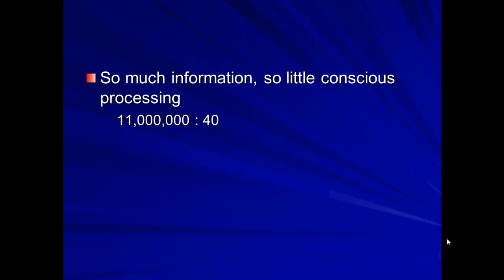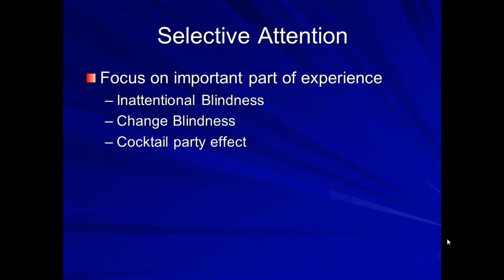Our attention really needs to be focused on part of the environment because we can't process all of it. This is called selective attention — our ability to focus on the important parts of our environment or experience. For example, you don't think about how the seat feels against your body because it's not important most of the time. Other things are more important, like what's going on on the roads as you drive or what's being said in the classroom.